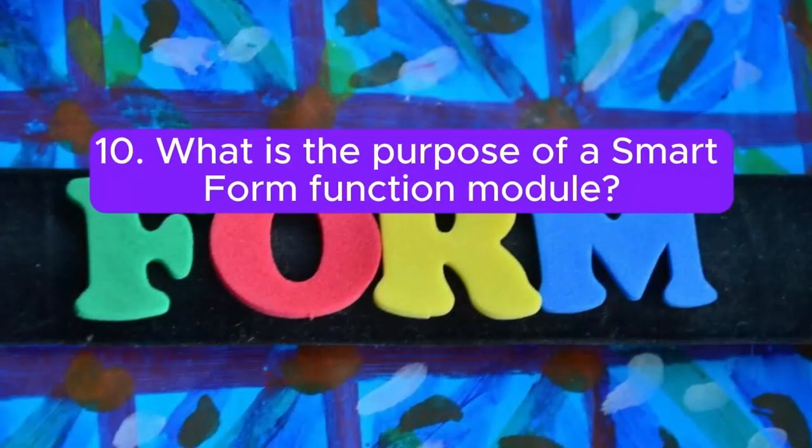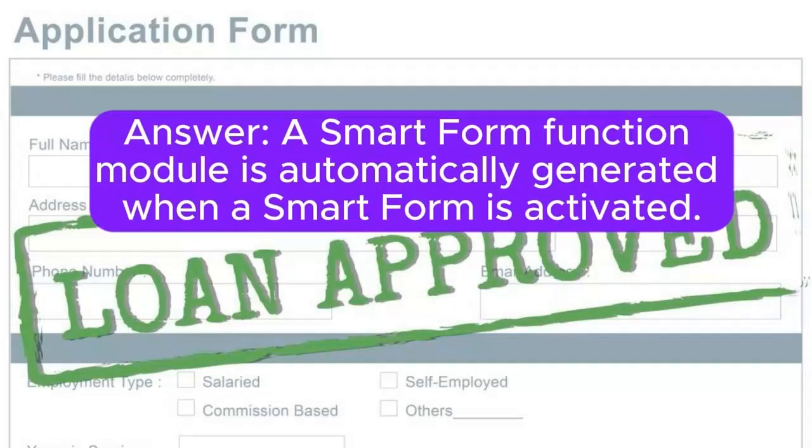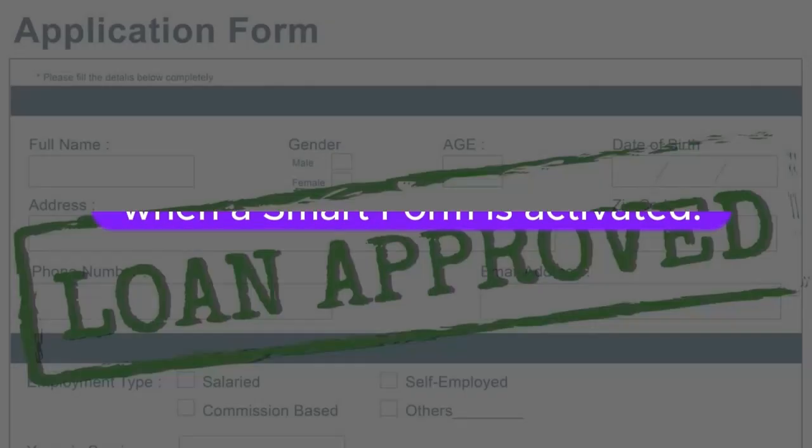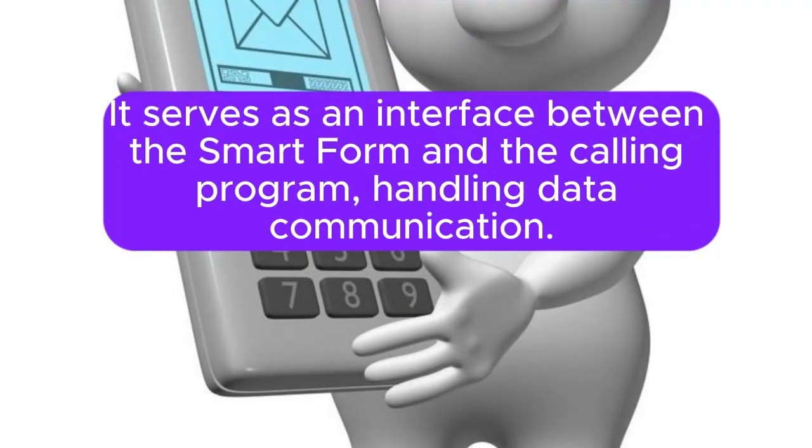10. What is the purpose of a SmartForm function module? Answer: A SmartForm function module is automatically generated when a SmartForm is activated. It serves as an interface between the SmartForm and the calling program, handling data communication.